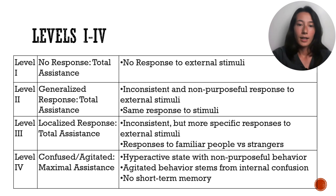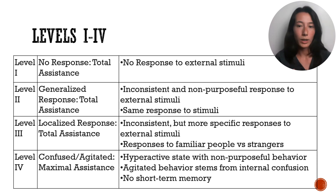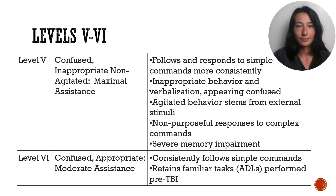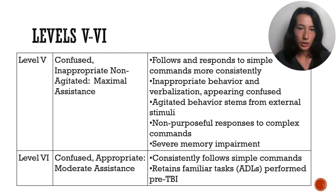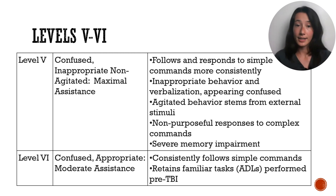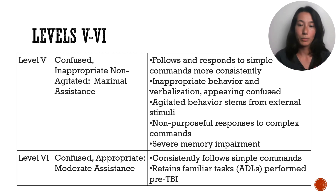Level 4: this is when a patient starts to be more active, even though their actions or behaviors don't really align with what is happening — but this is the beginning of appearing agitated. Level 5: the patient begins to be able to respond and follow simple commands; however, it's inconsistent. The remainder of the time the behavior is inappropriate to the situation, and the patient is still agitated. Level 6: the patient is able to respond appropriately to simple commands, and now it's consistent. The patient begins to perform tasks that they were able to perform prior to the TBI.